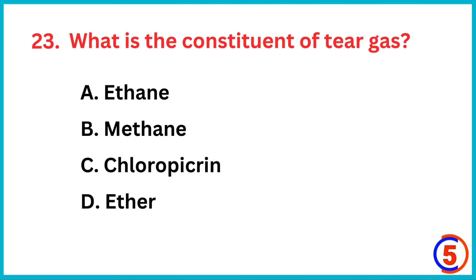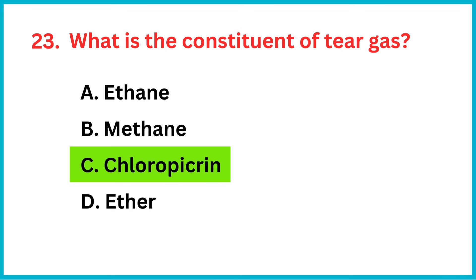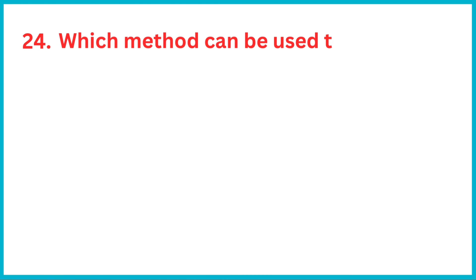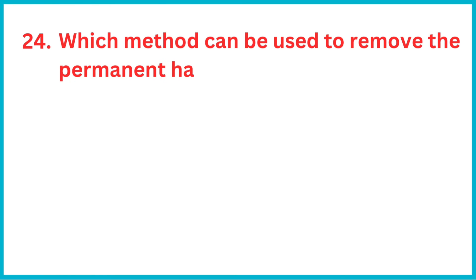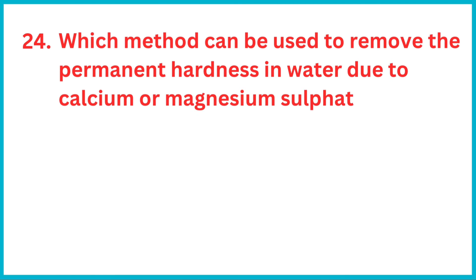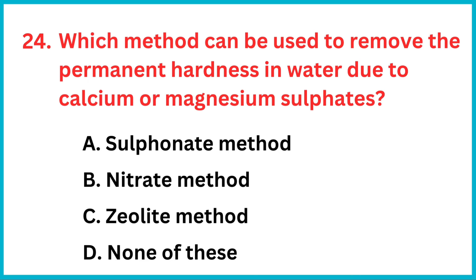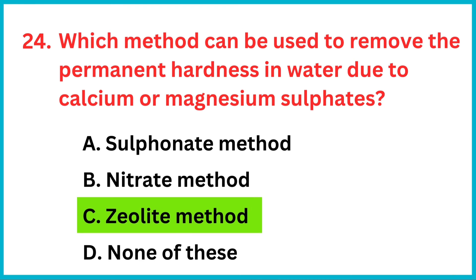Which method can be used to remove the permanent hardness in water due to calcium or magnesium sulfates? The correct answer is option C: zeolite method.